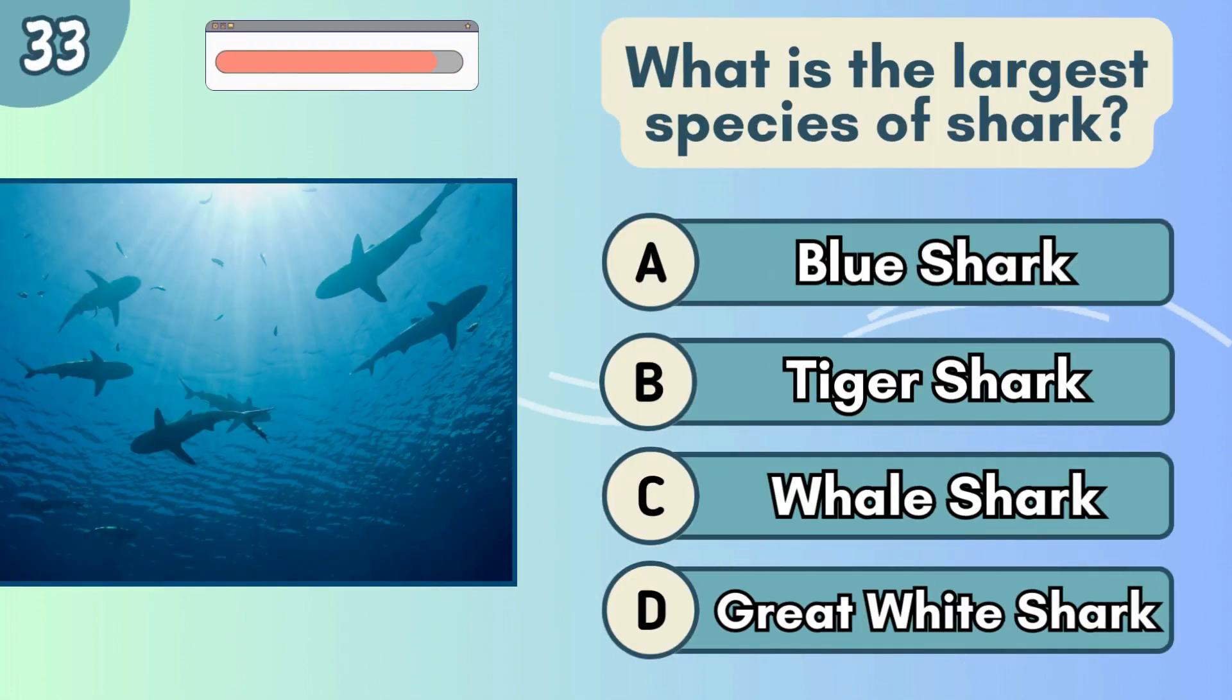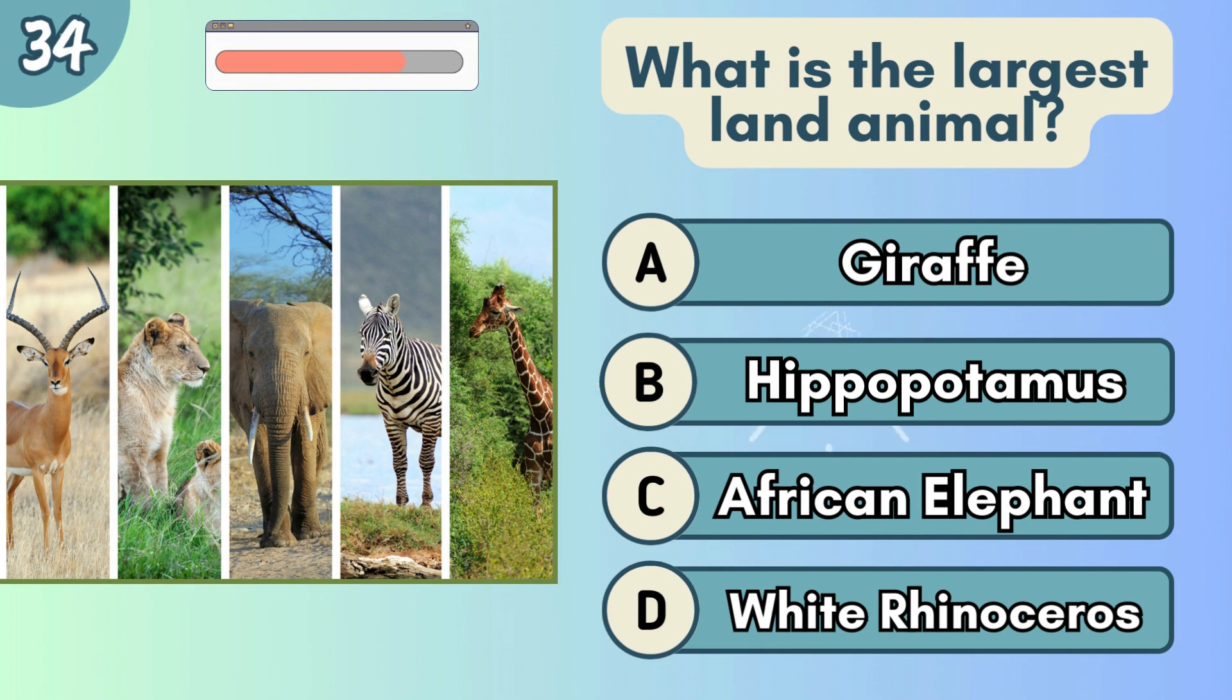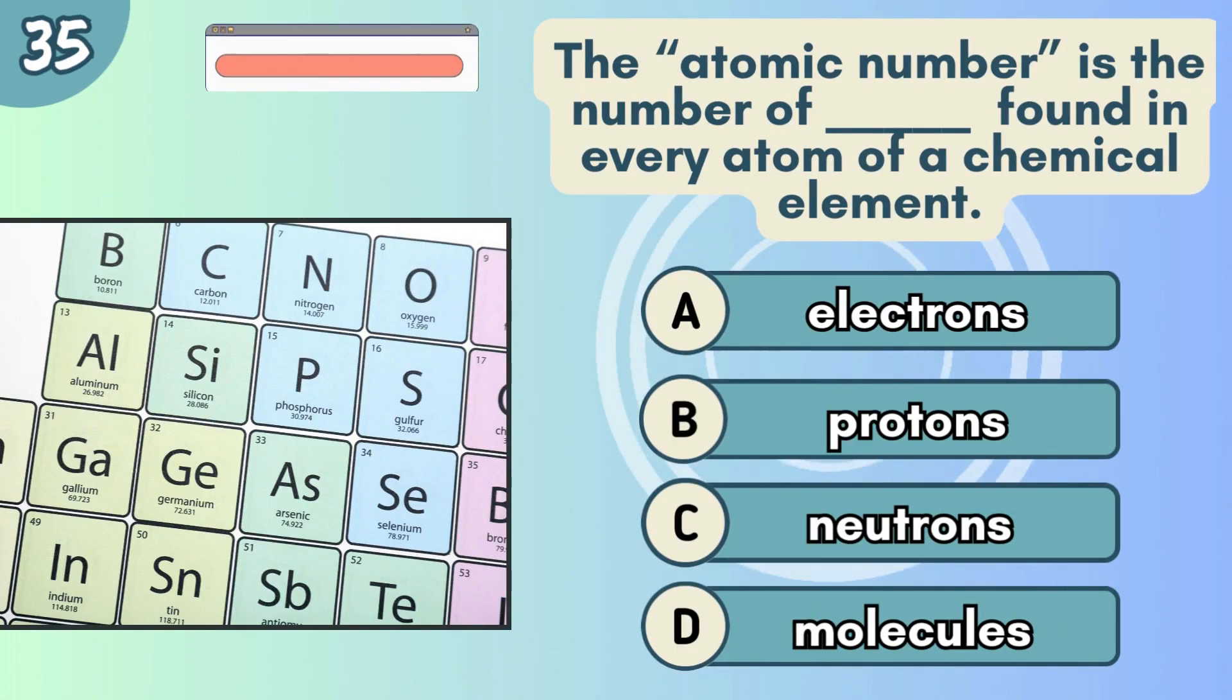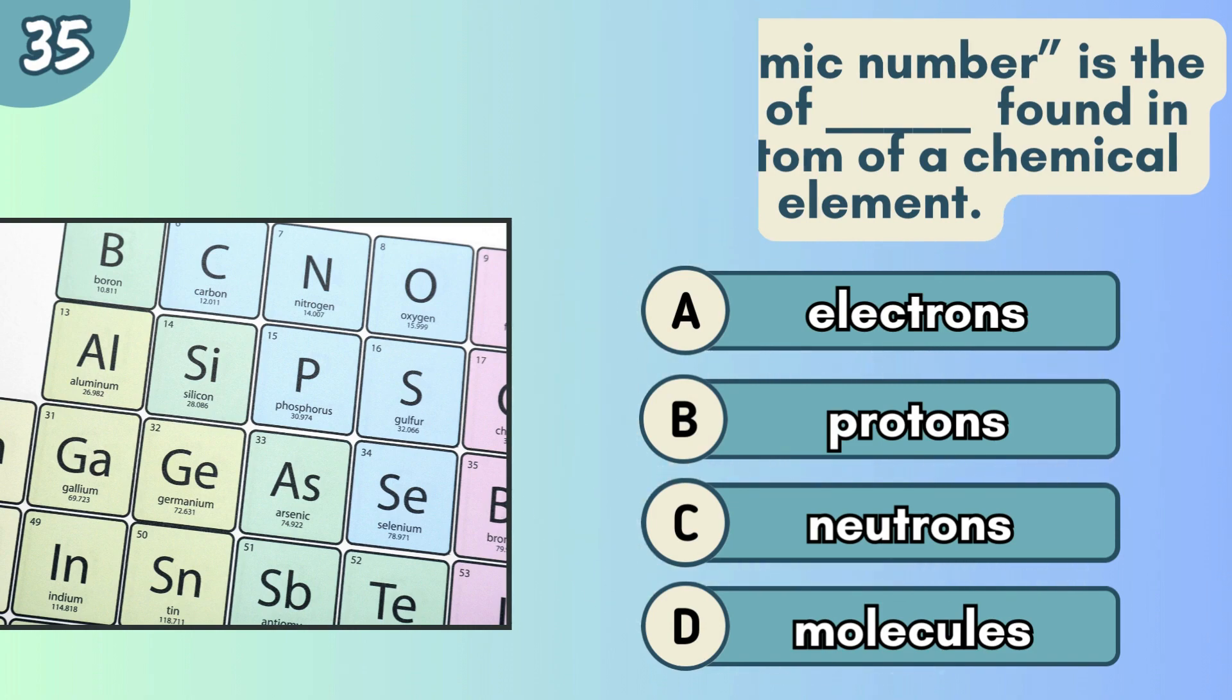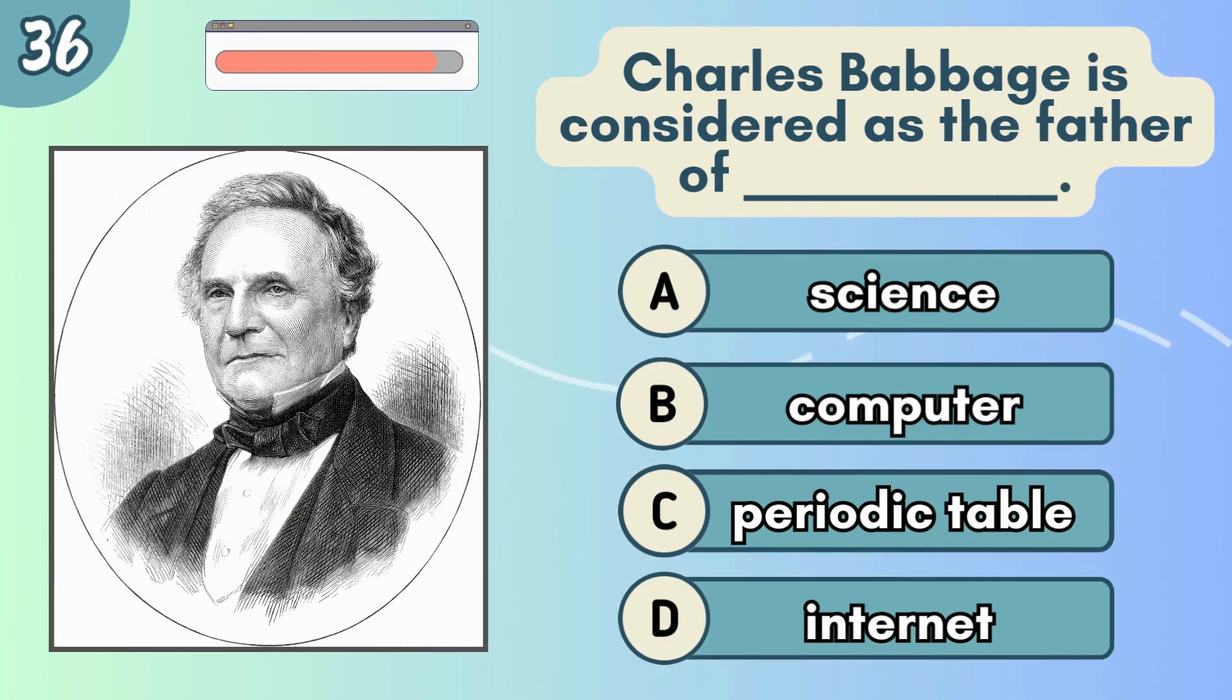What is the largest species of shark? The atomic number is the number of blank found in every atom of a chemical element. Charles Babbage is considered as the father of blank.